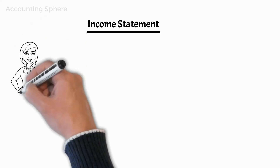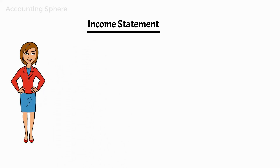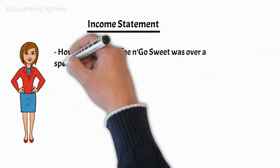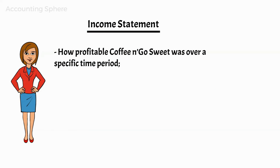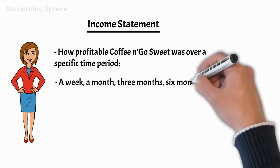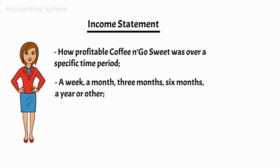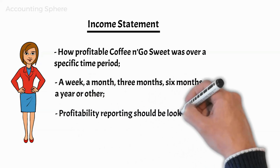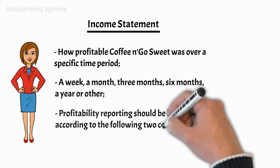Marianne points out that an income statement will demonstrate how profitable Coffee & Go Sweet was over a specific time period. The time period in question can be a week, a month, three months, six months, or a year, following what Michael deems as the most beneficial for his business. She continues by adding that profitability reporting should be looked at according to the following two components.